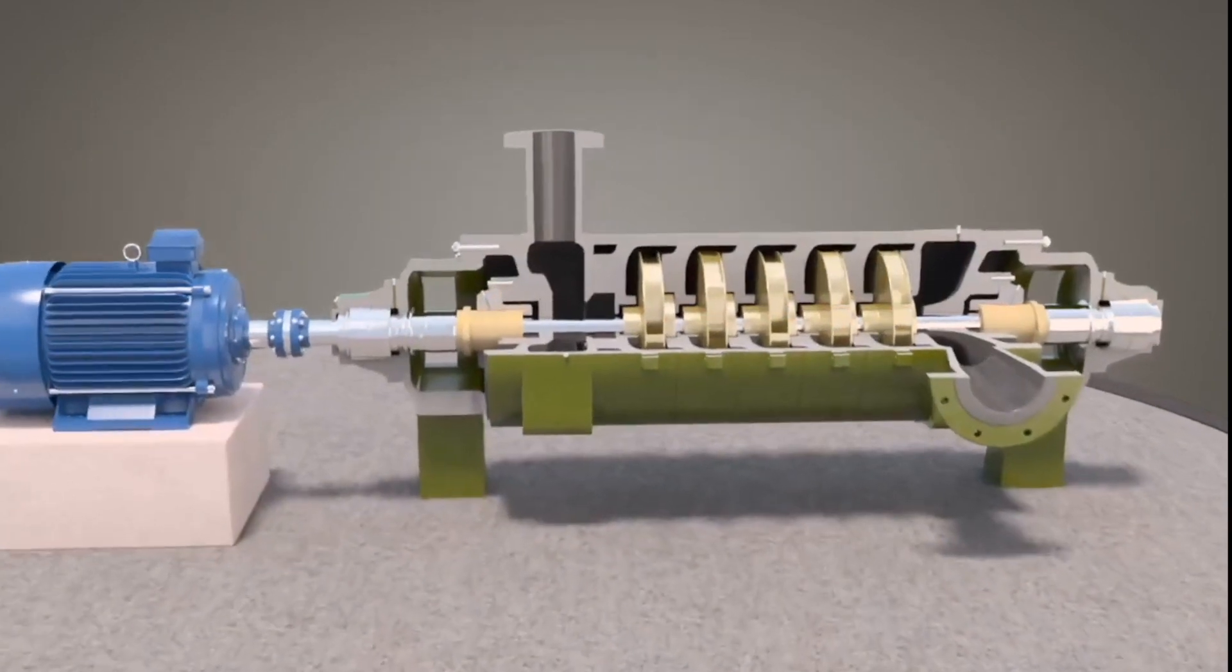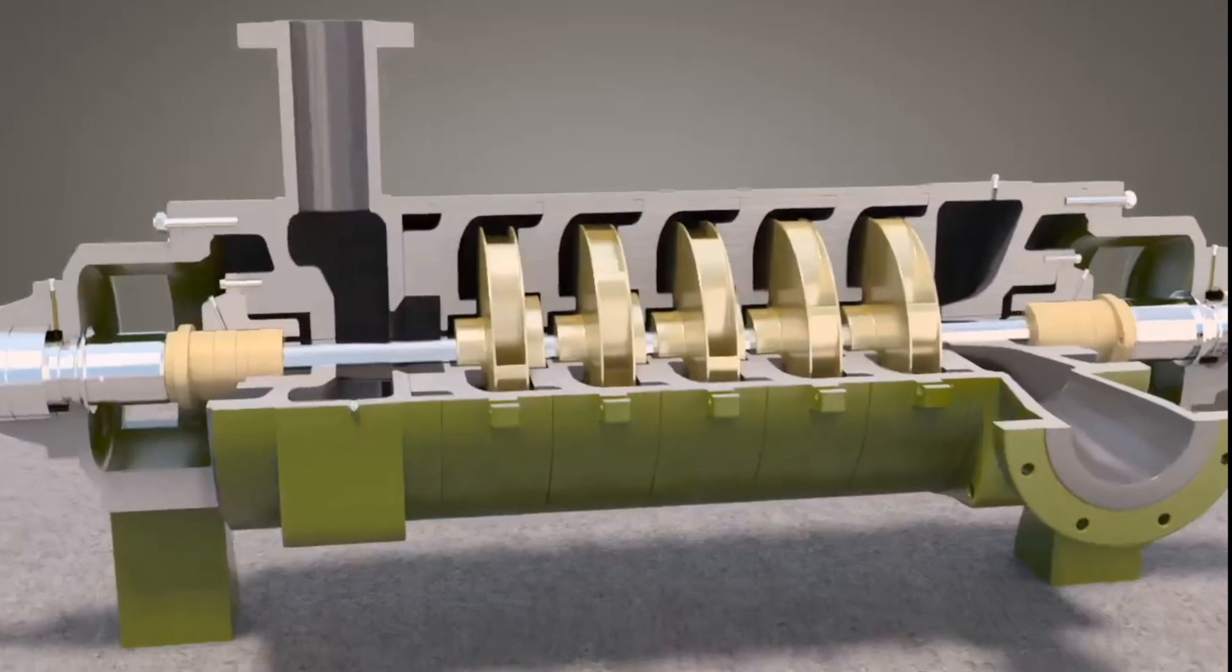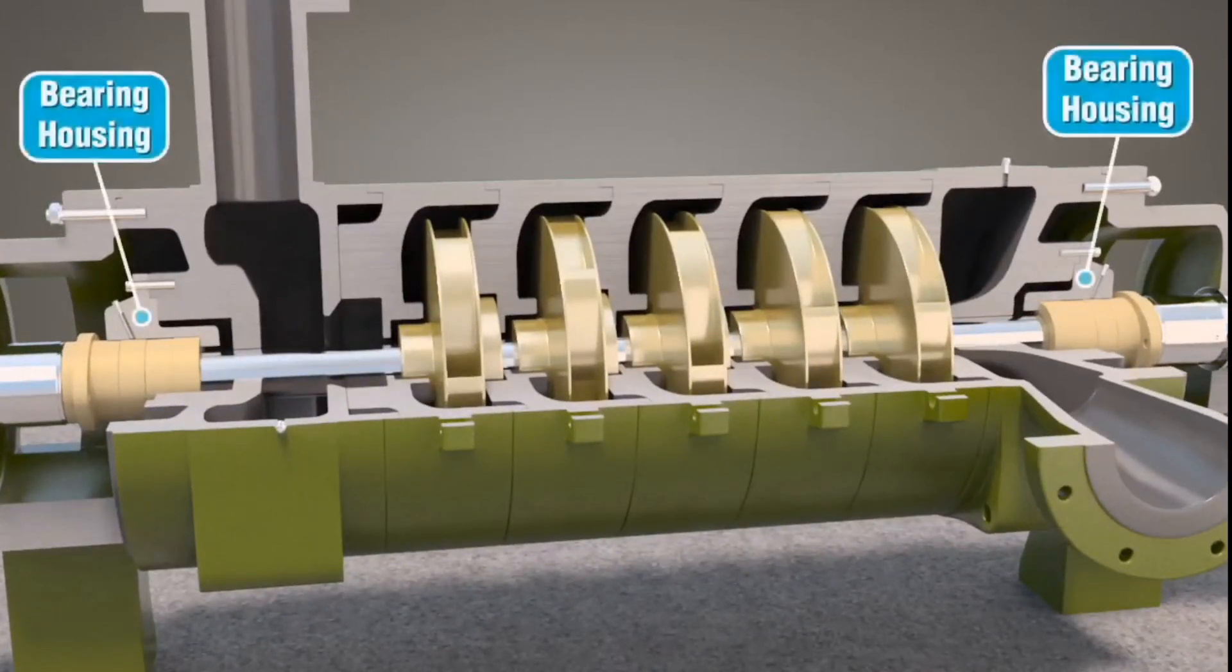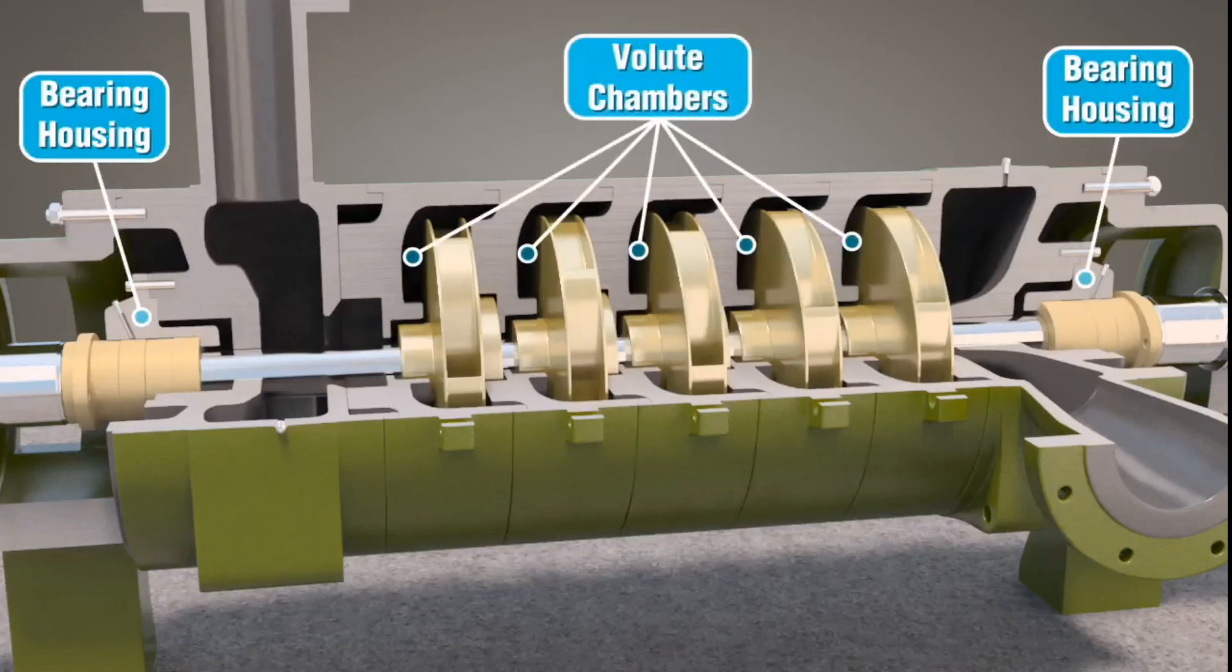The pump casing is the body of the pump and contains the shaft and impellers. The casing provides shaft bearing housings at each end and a volute chamber for each impeller.